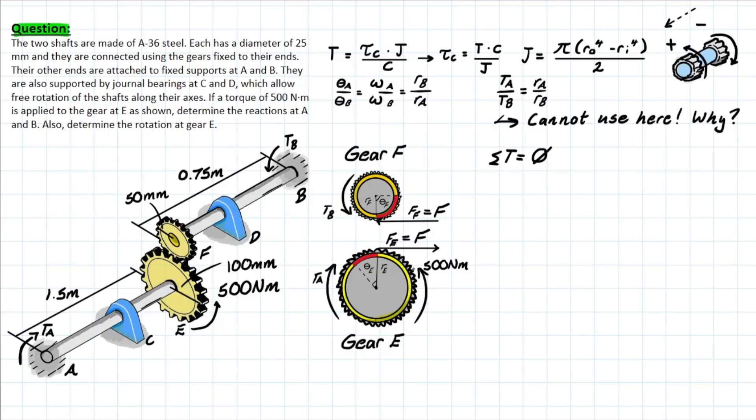Now another point that I'd like to bring up before even hopping into the problem is some people might be wondering why can't I just use the relationships from our previous gear ratio videos in order to solve this problem, such as the relationship or the ratio of torque at A over torque at B is equivalent or equal to the ratio of the radius at B.